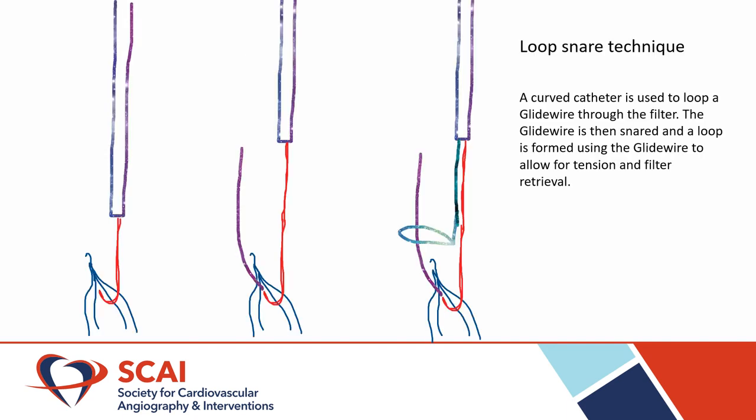In the loop snare technique, a large straight sheath, ideally 12-French or larger, is advanced. Through that, a curved catheter like the OmniFlush or the SOS is advanced underneath the IVC filter. Through that, an exchange-length glide wire is advanced back up, and that glide wire is snared with a gooseneck snare, perhaps 15 millimeters or larger, and then withdrawn and externalized. Once that is done and you have a good grip on the filter, you can advance your sheath down and attempt to capture the filter, which is exactly what we did.